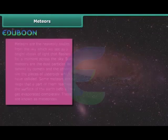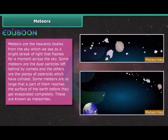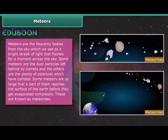Meteors. Meteors are the heavenly bodies from the sky which we see as a bright streak of light that flashes for a moment across the sky. Some meteors are the dust particles left behind by comets and the others are the pieces of asteroids which have collided. Some meteors are so large that a part of them reaches the surface of the earth before they get evaporated completely. These are known as meteoroids.